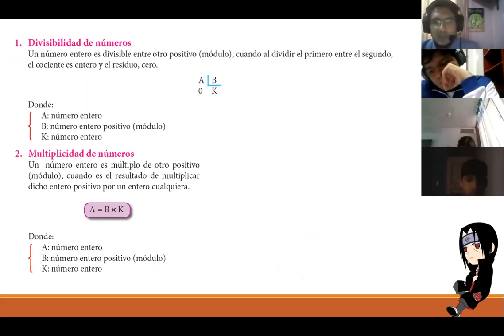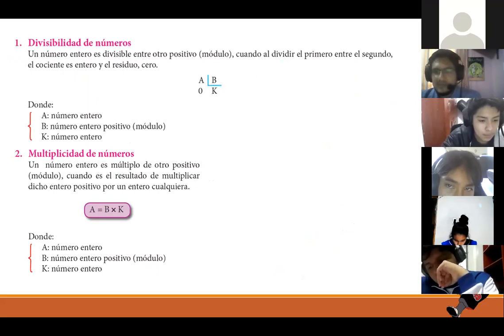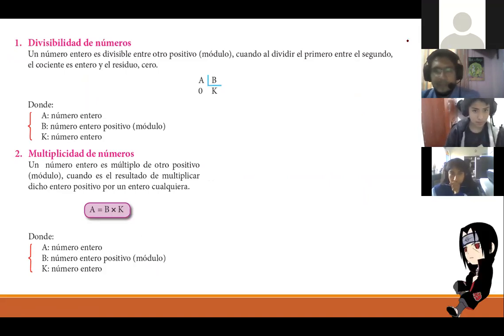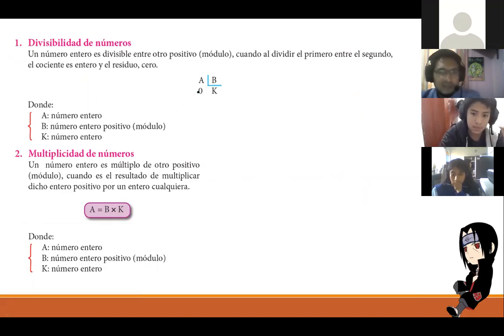Divisibilidad de números. A ver, Sarumi, nos puedes ayudar acá leyendo? Un número entero es divisible entre otro positivo módulo, cuando al dividir el primero entre el segundo, el cociente es entero y el residuo es cero. Gracias. Entonces, ahí está la división. Sería A entre B, y acá tenemos el cociente, y el residuo va a ser cero.